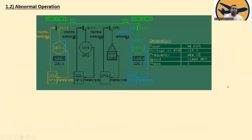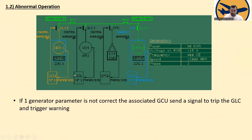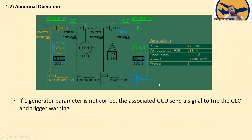Now let's look at abnormal operation. If one generator parameter is not correct, the associated GCU sends a signal to trip the Generator Line Contact and trigger a voting. So if at least one parameter is not correct, the associated Generator Control Unit will send a signal to trip the generator line contact and trigger a fault response — that is the abnormal operation.